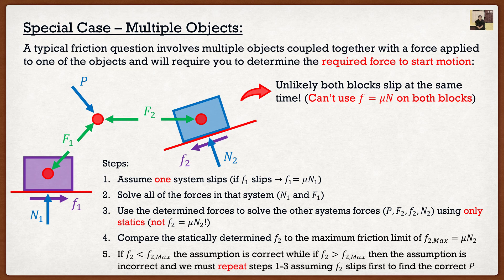So if F2 is less than F2 max, our assumption is correct. We're good to go. And whatever value of P we got, that's our value of P. That's good to go.